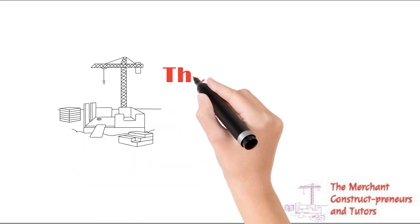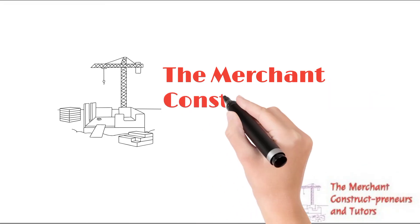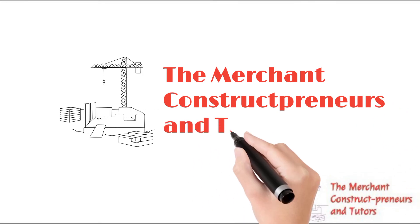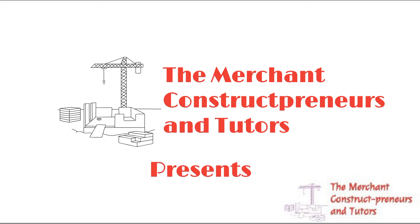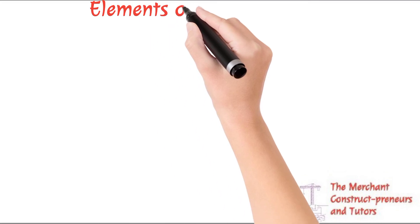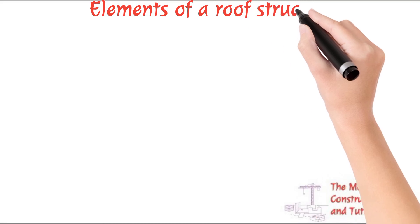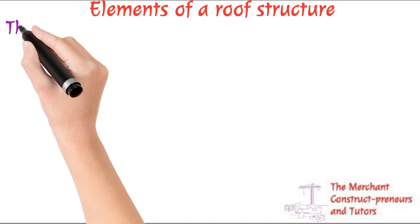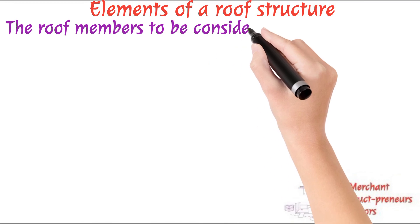Hi everyone, welcome to this channel, The Merchants Consopreneurs on Tutos, your go-to channel for everything about construction software and engineering. In my last video I talked about roof structures — noggins calculation, the quantity of materials and wood needed for noggins, which are usually constructed with two-by-two woods. I also made another video about roofing sheets. Today, in this video, I'll be looking at the elements of a roof structure.